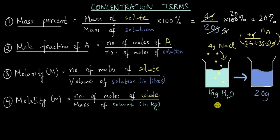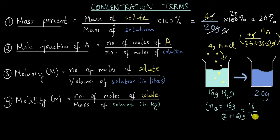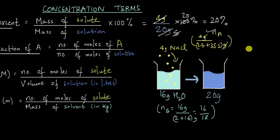Let's also calculate the moles of the solvent — we'll call water B. The number of moles of the solvent is 16 grams divided by the molar mass of water, which is 2×1 for hydrogen plus 16 for oxygen = 18 g/mol, giving us 16/18 moles. Now that we have Na (moles of solute) and NB (moles of solvent), the mole fraction of A = Na / (Na + NB). Don't forget: the denominator is the total solution, not just the solvent.